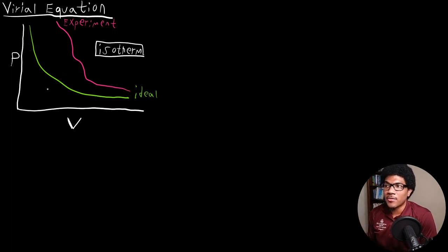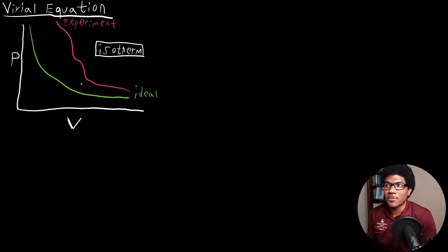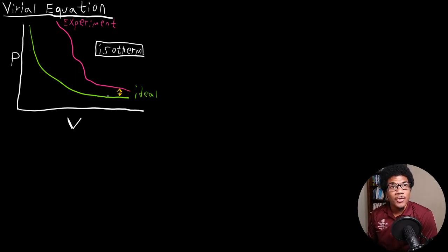So that's what I've plotted out here. This is an isotherm varying pressure and volume with respect to constant temperature. So let's say that these were both calculated and taken at the same temperature — the ideal isotherm at a particular temperature and the experimental isotherm at a particular temperature. At high volumes and low pressures, there will be very little deviation between the ideal and the experimental curve.